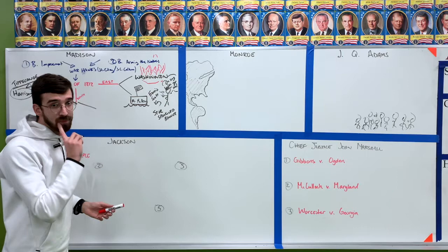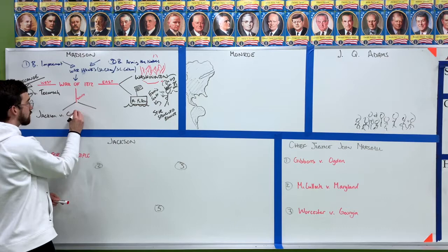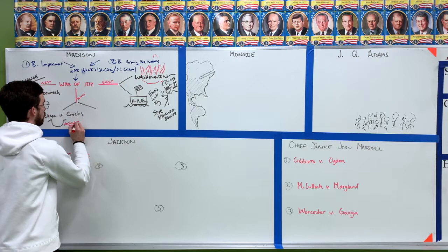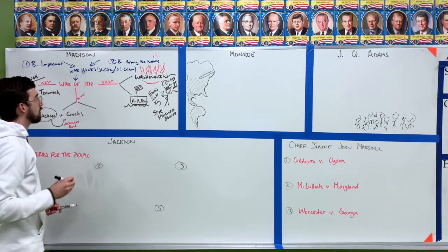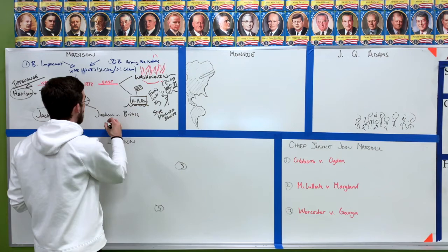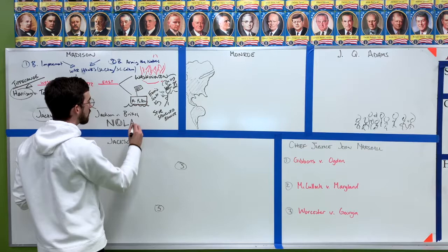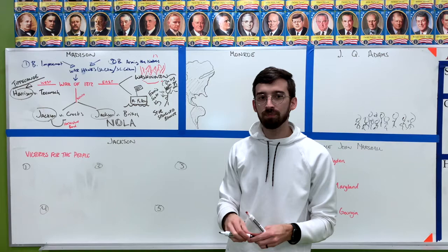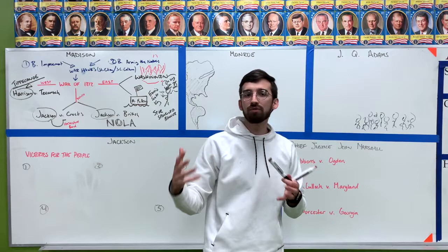Finally, the war in the South can be broken into two events, both battles. The first is Andrew Jackson versus the Creeks at the Battle of Horseshoe Bend — Andrew Jackson wins. Then he goes on to fight one more battle: Jackson against the British. This is the last battle of the war, fought after the peace treaty has been signed, at New Orleans, Louisiana. Andrew Jackson wins and becomes known as the Hero of New Orleans, sometimes known as Old Hickory. That basically brings the War of 1812 to an end.